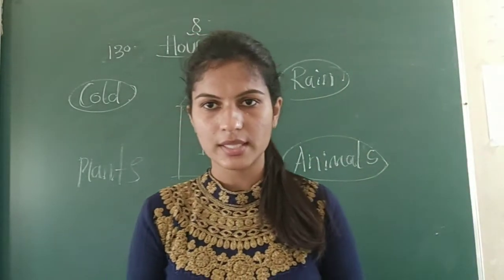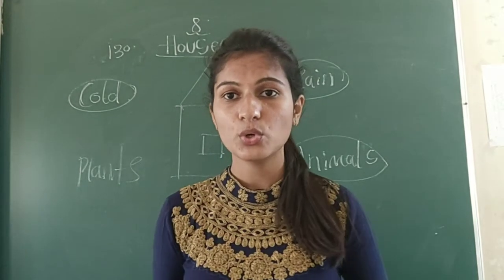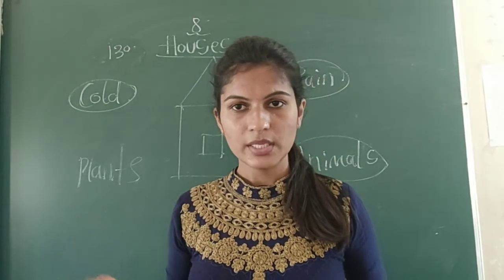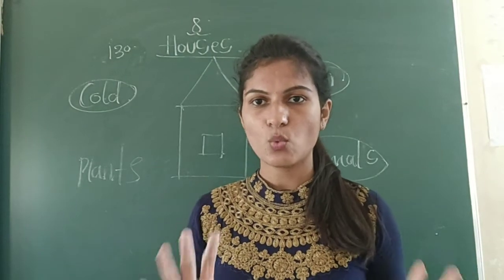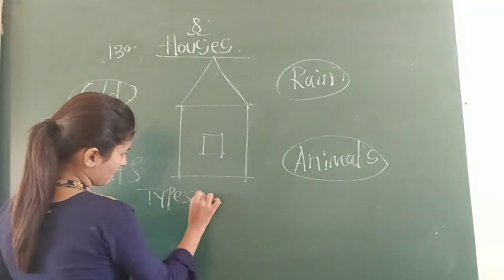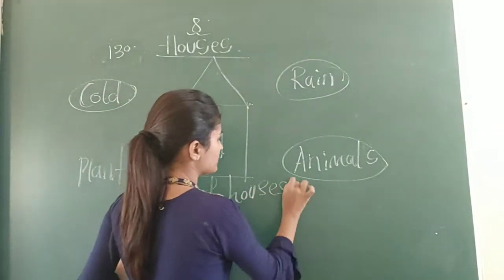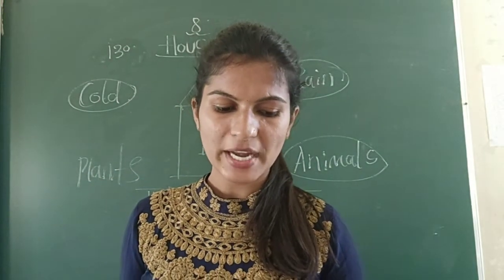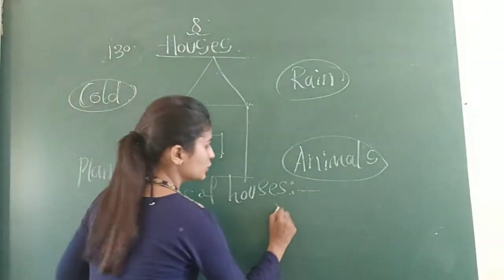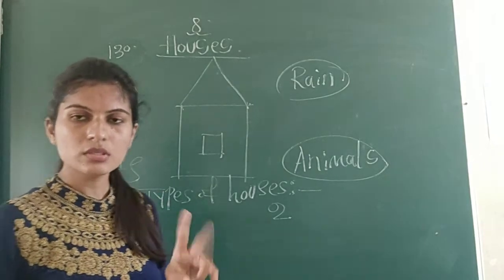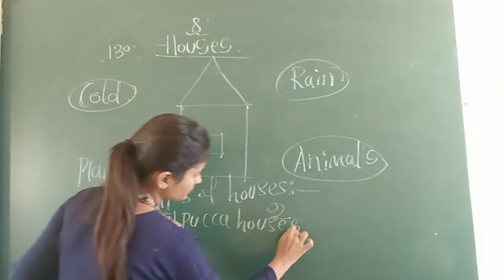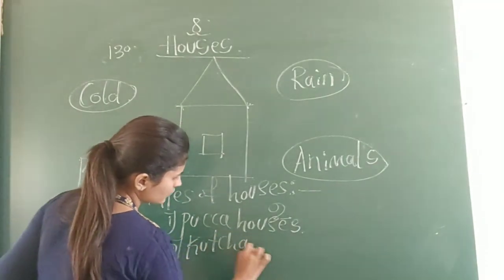Some types of houses are there. You can see around you - some houses are very big in size, some houses are small in size. Let's study what those types are. There are two types of houses. First one is pakkah houses, and second one is kachha houses.